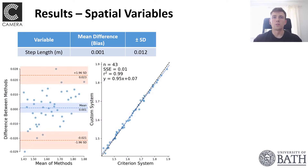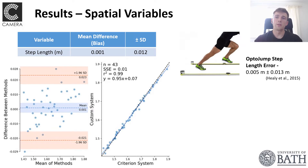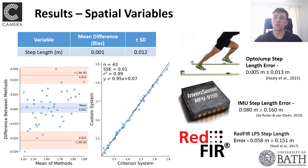In terms of validation results for spatial variables, we saw excellent agreement between our system and the ground truth data, with an average difference in step length of around one millimeter. This demonstrates that despite the absence of markers, we were able to very reliably find the position of the foot and track it through space and time. Comparing to other commercial field-based systems, we saw improved accuracy over the OptiJump system, IMU-based step length calculation, and an ultra-wideband IMU hybrid system.